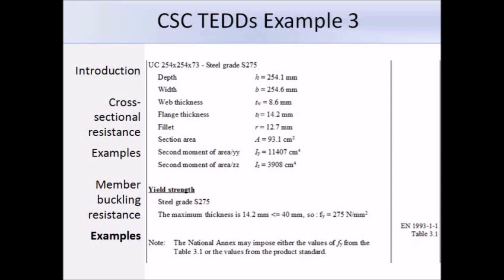The first step is to work out the yield strength fy. Using table 3.1 of the Eurocode, for a maximum thickness of 14.2 mm, we get a yield strength of 275 N/mm². Note that the UK National Annex recommends using the product standard instead, but in this case the answer is the same.